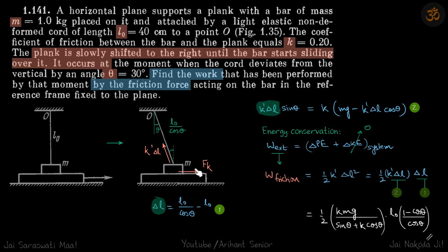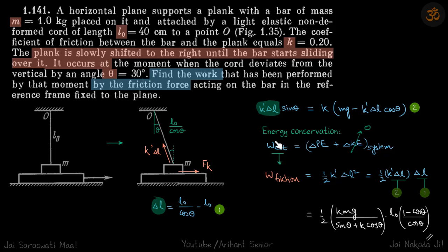Let's start by writing that equation. In the horizontal direction we are balancing forces: k'·Δl·sinθ is equal to the friction force, where k is the friction coefficient and k' is the stiffness of the elastic string. So forces in horizontal directions are balanced.